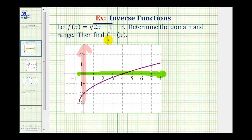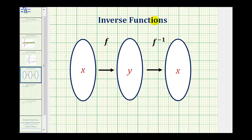Now let's go ahead and find the inverse function. Remember, inverse functions undo each other, meaning if function f has an input of x and an output of y, this y becomes the input into the inverse function, which returns the original value of x.